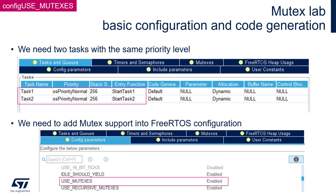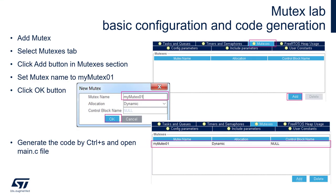Then please select the Config Parameters tab and enable UseMutexes. In the next step, please select the Mutexes tab, click on the Add button under the Mutexes section, and create a mutex, keeping all the settings at their default field values.